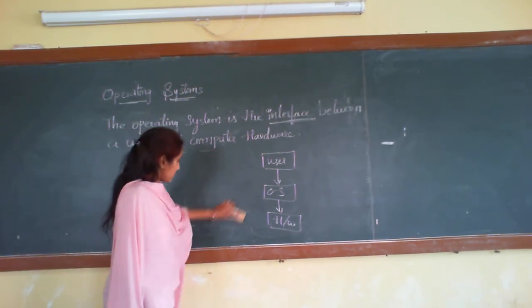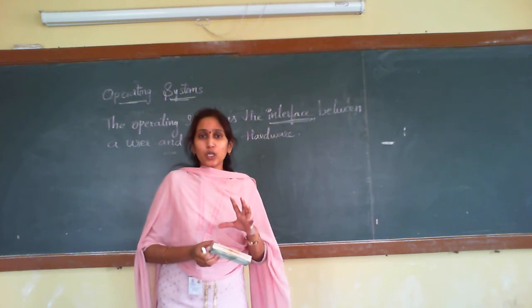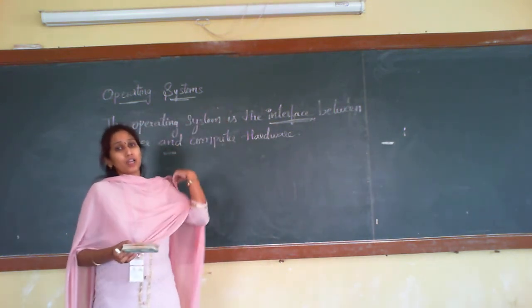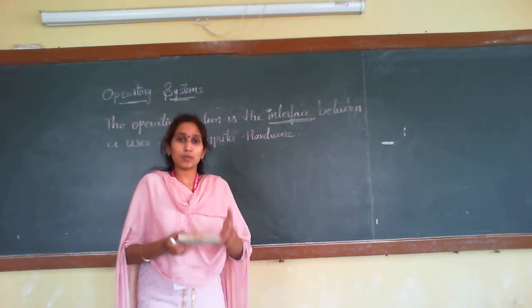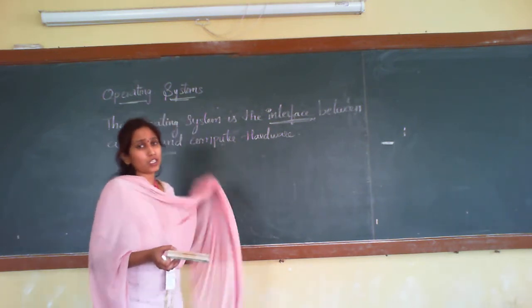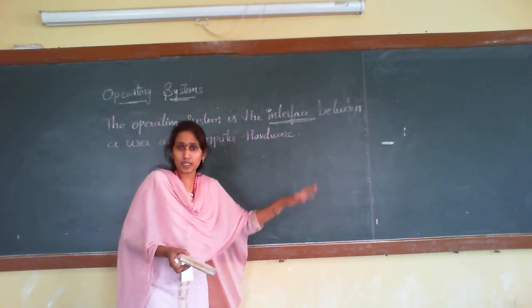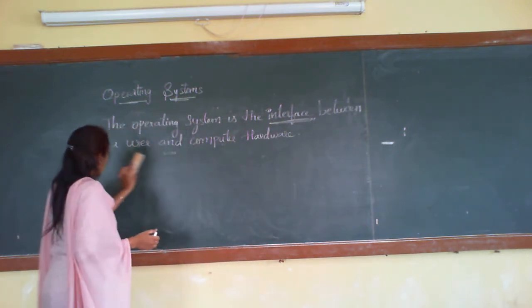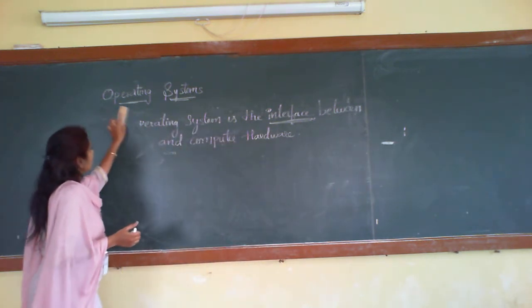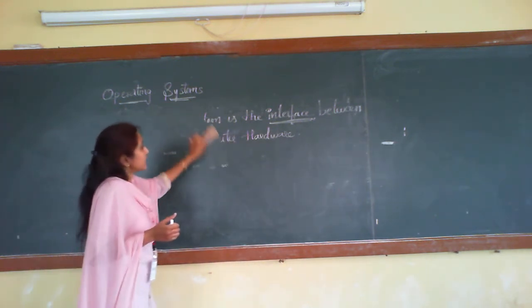So why do we need an operating system? Because the operating system manages multiple things: it tries to manage resources, it tries to manage the process, and it tries to manage the memory. Here I would like to introduce the concept of process states, and then next we will discuss about the shape events.